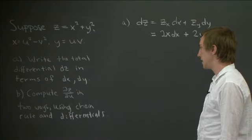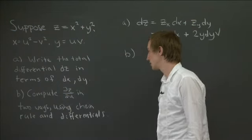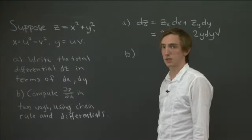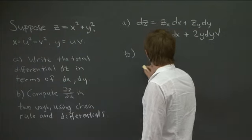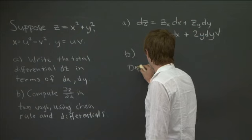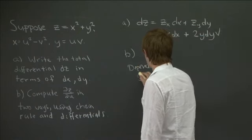Now, for b, we want to compute this partial derivative in two different ways, first using the chain rule. So let's remember what the chain rule says. So whenever I think about the chain rule, I like to draw this dependency graph.